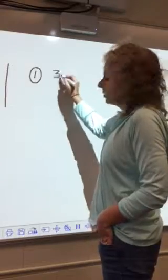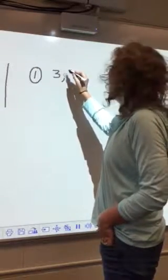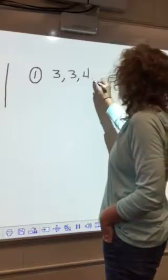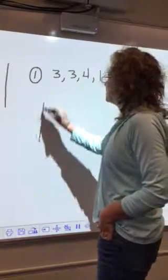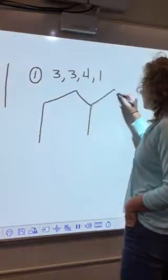I rolled the numbers three, three, four, and one. Now what I'm going to do is make my houses.